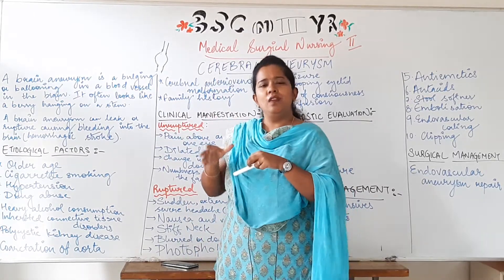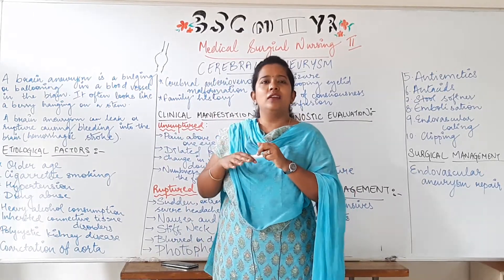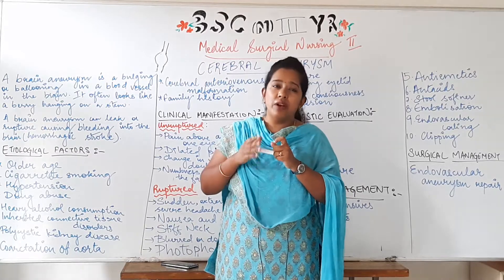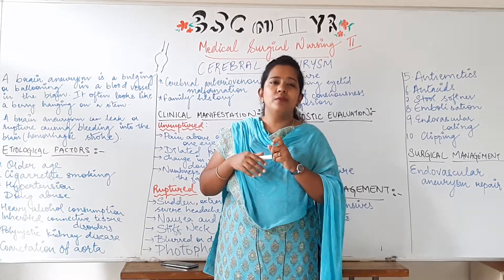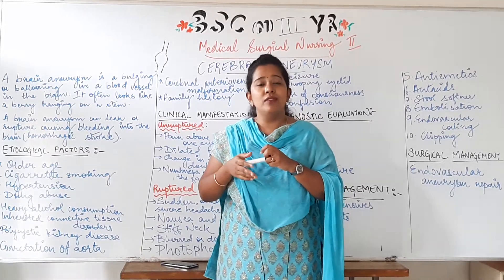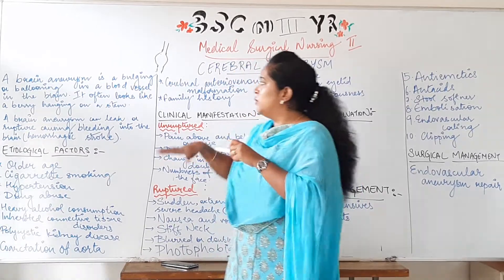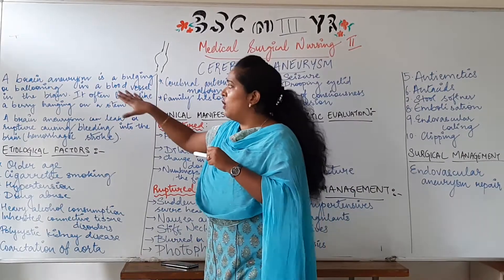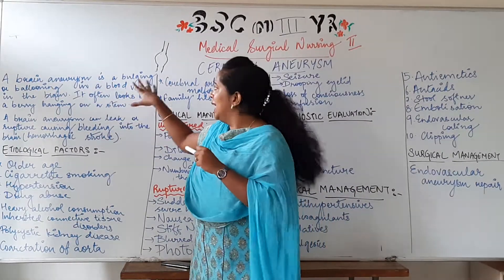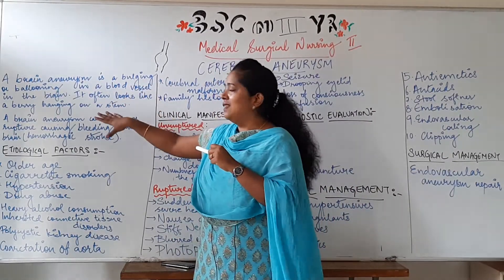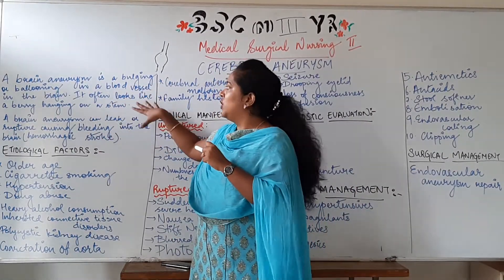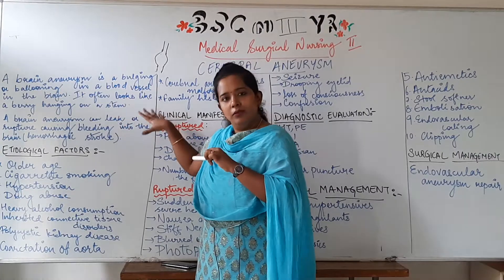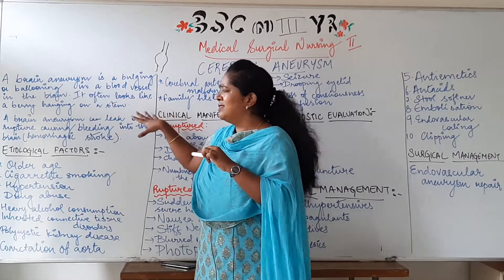If it is happening in the brain, then that condition is called Intracranial Aneurysm, Cerebral Aneurysm, or Brain Aneurysm. Brain Aneurysm is a bulging or ballooning in a blood vessel in the brain. It often looks like a berry hanging on a stem.